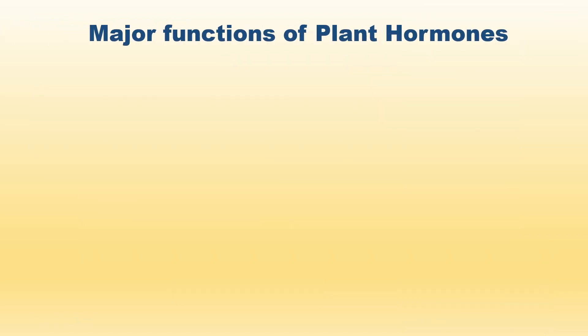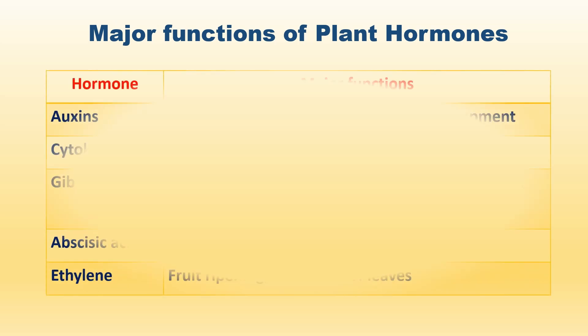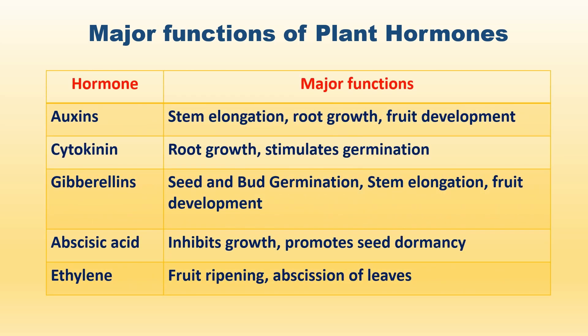The major function of plant hormone is as a chemical substance. There are also hormones that promote enlargement and cell differentiation in plants, which is a function of stem elongation, root growth, and root development.